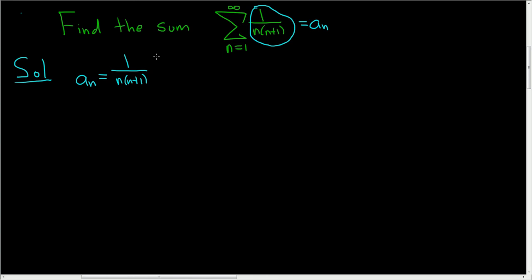The next step is to use partial fractions. So we can write this as a over n plus b over n plus 1. Then we'll find a and b. To do that, we'll multiply both sides by n and n plus 1.